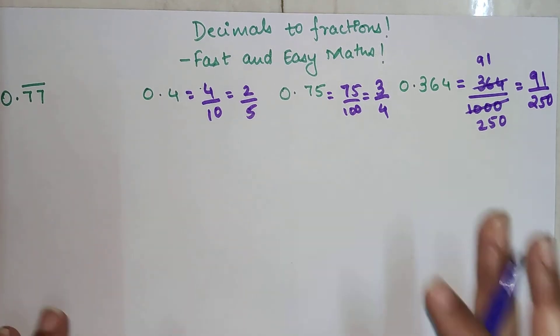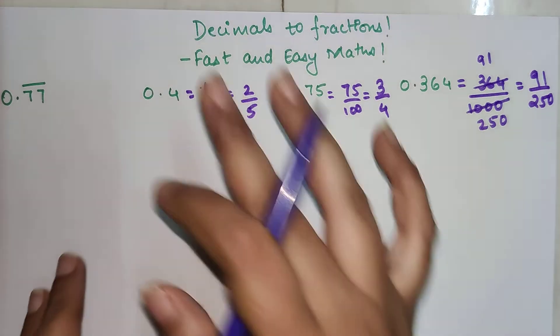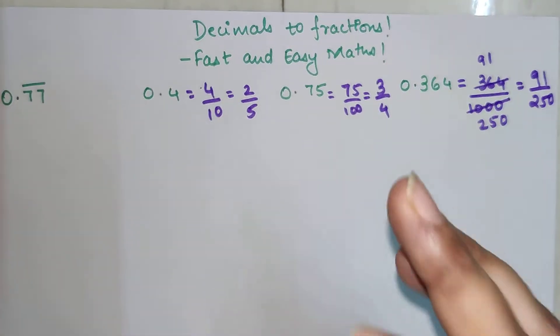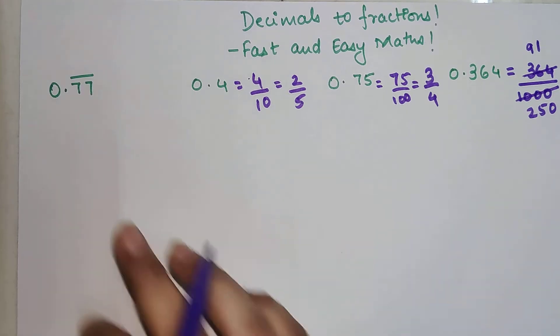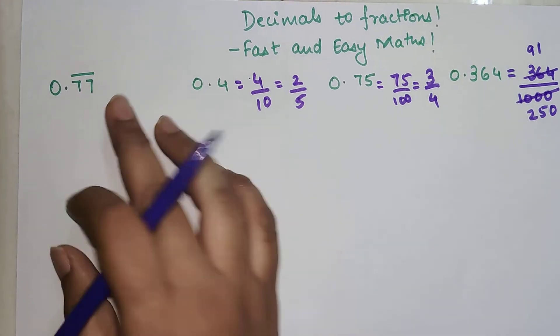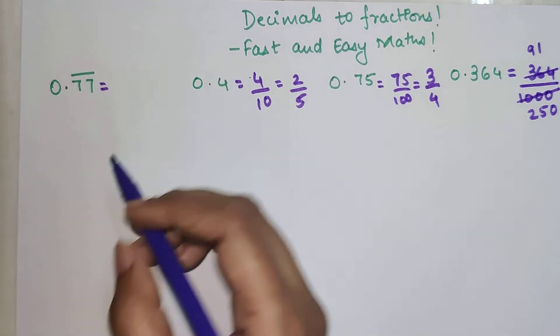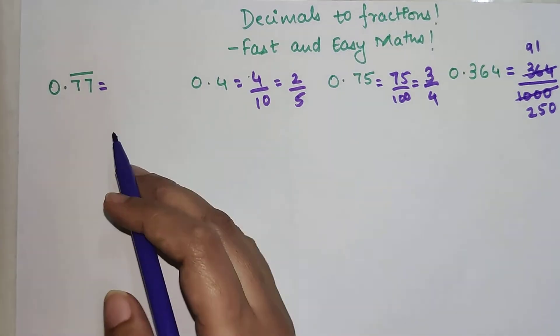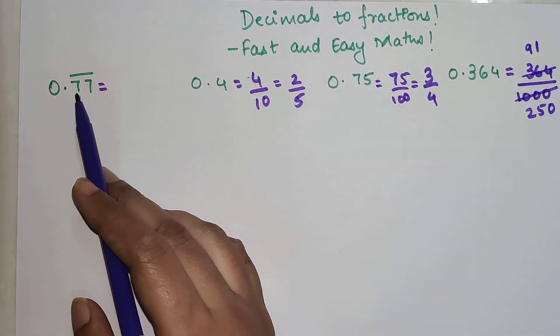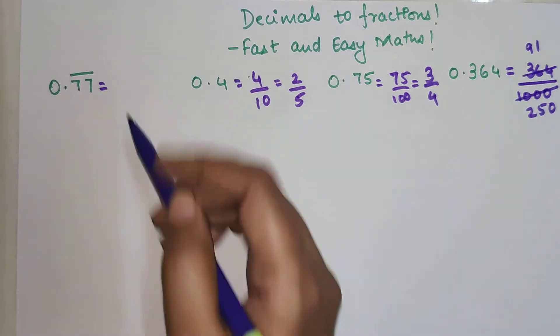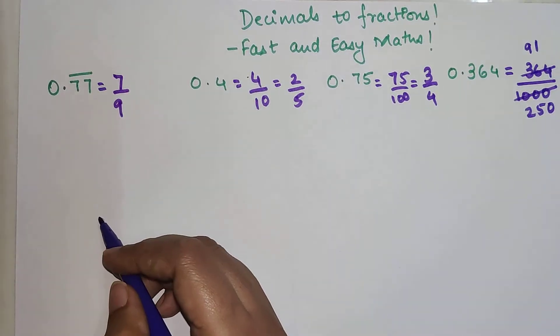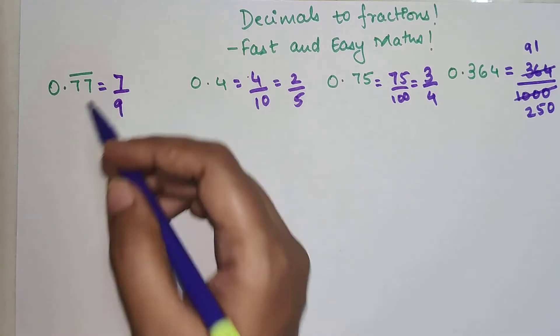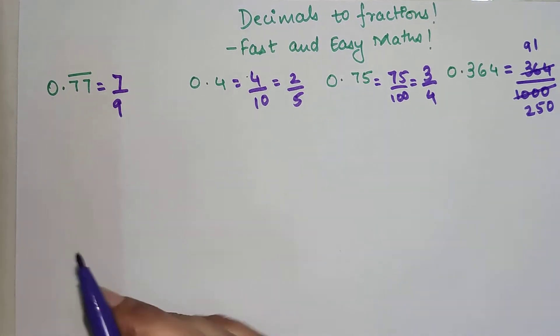I hope you all have gotten the idea of how to convert any decimal number into a fraction. Now coming to this particular format. Whenever you have a single number which is getting repeated and you just have a point and the single number is repeating itself immediately, then you can directly write this as 7 upon 9. I will give you the explanation for this as well, but this is a trick which I want you all to know.